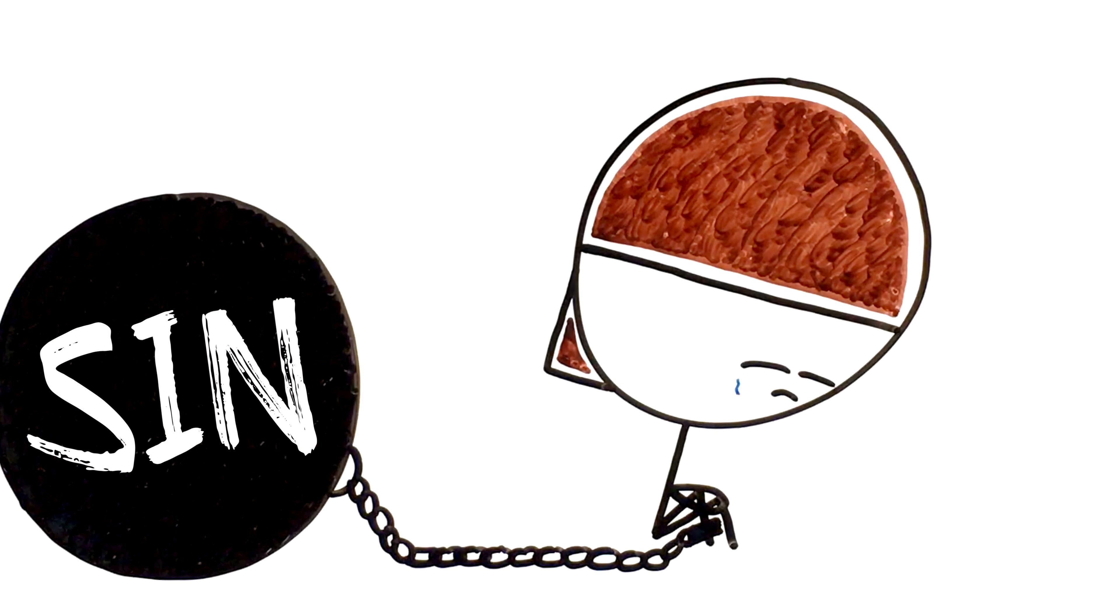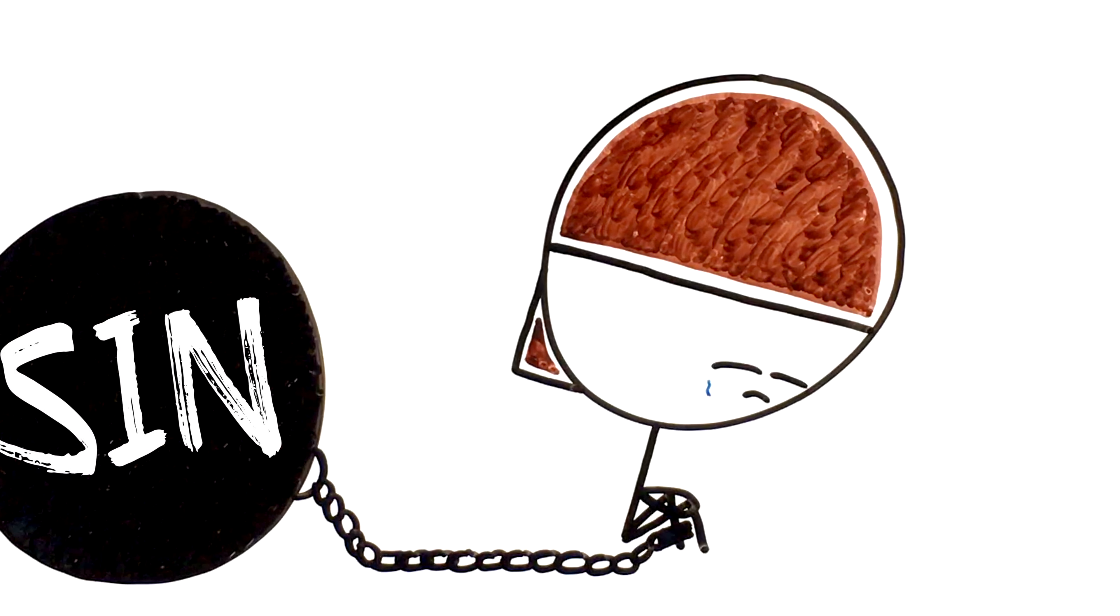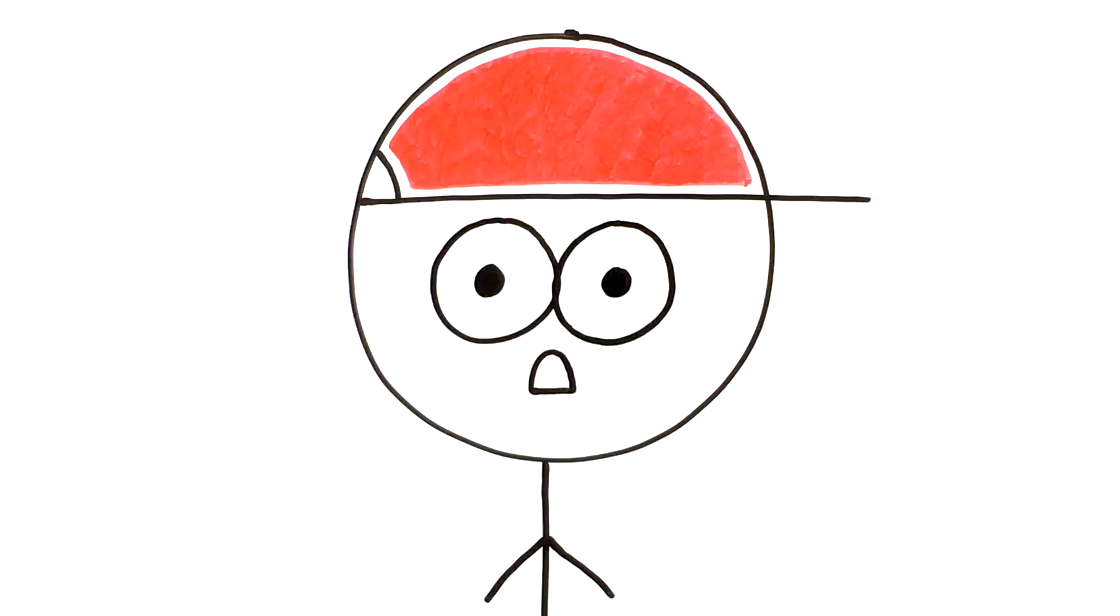This is the textbook definition of life under the old covenant. This is what life was like under the law without a transformed heart. Is it any wonder that Paul finishes chapter 7 so defeated?